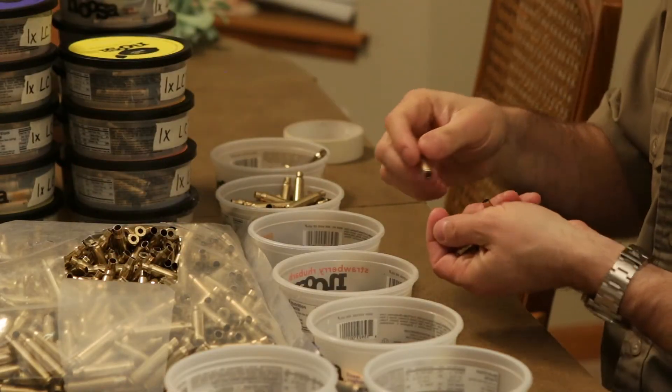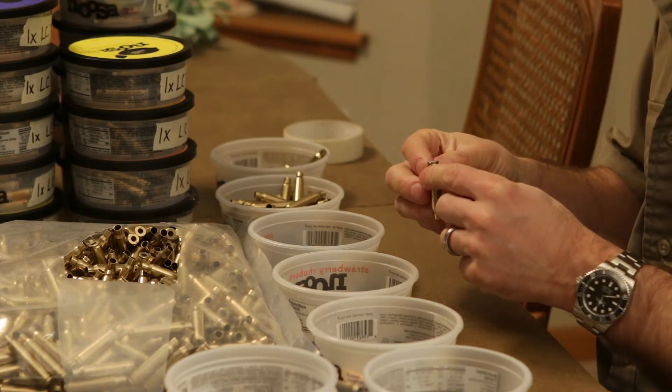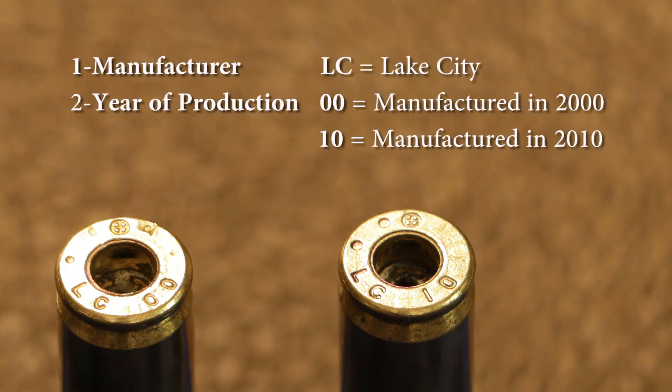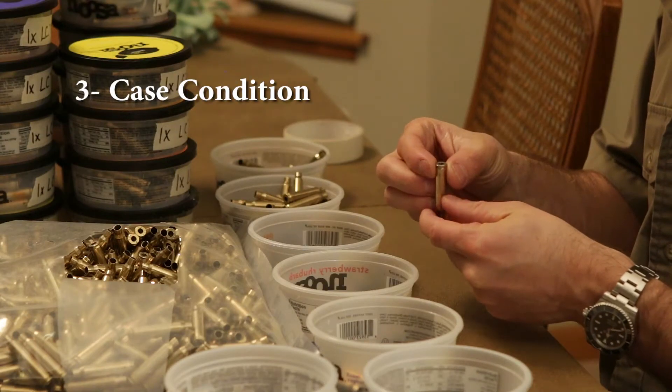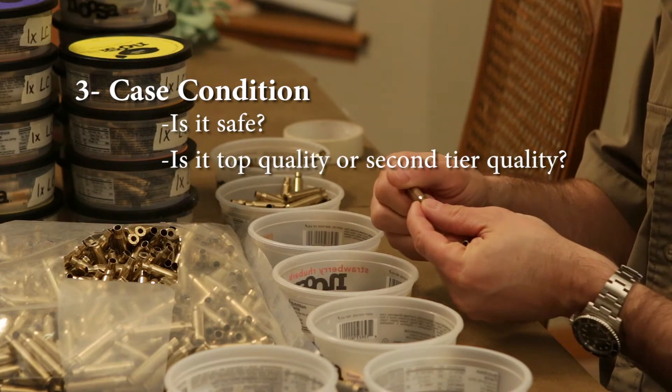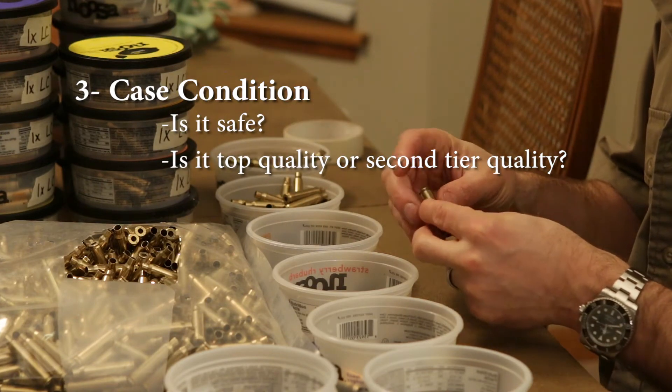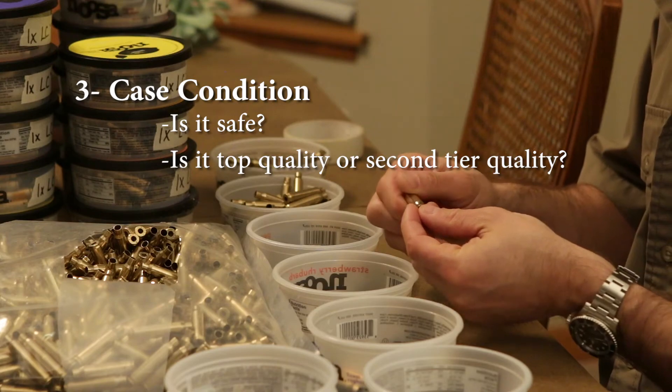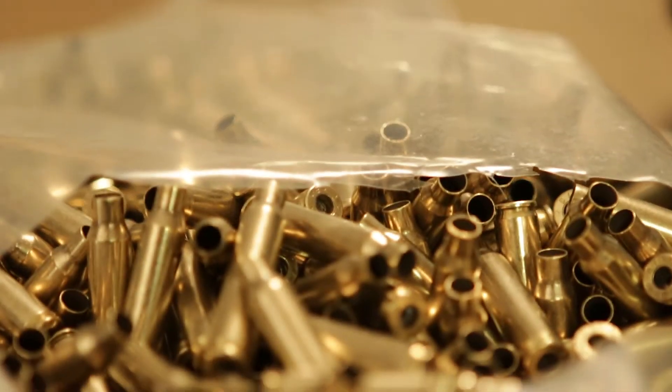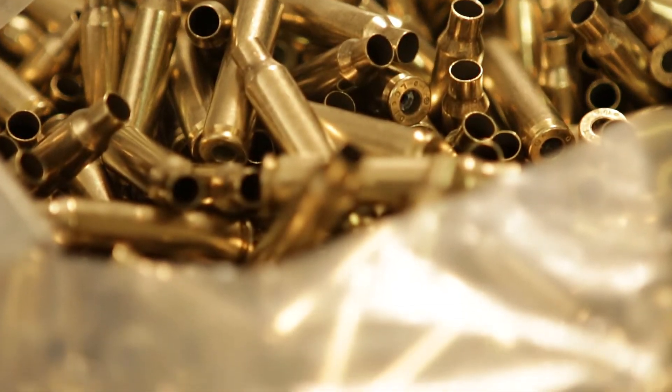There are three categories we will use to sort our once-fired cases. The first two, the manufacturer, which you can think of as the brand of the case, and the year of production can be read directly off of the head stamp. Third, we need to determine the condition of the case. Is it safe? Is it free of major dents, dings, or splits in the case? Is it a top-quality case that we can use for precision ammunition, or is it something that we can use for plinking or perhaps short-range hunting?